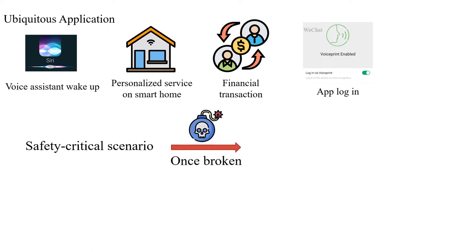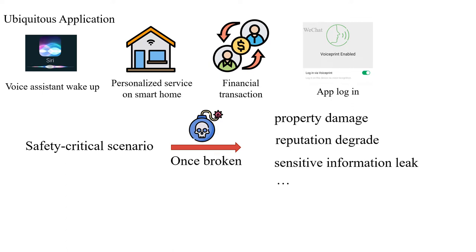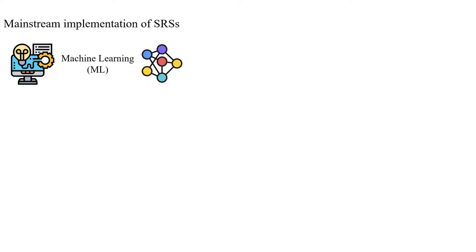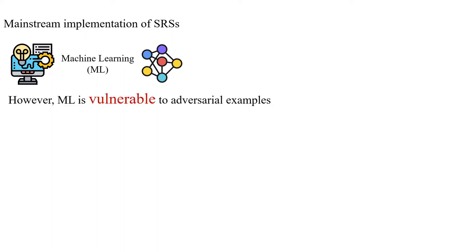So once the system is broken, it will cause property damage, reputation degradation, sensitive information leaks, and so on. So the security of speaker recognition systems is very important. The mainstream implementation of speaker recognition is machine learning. However, machine learning has been demonstrated to be vulnerable to adversarial examples.